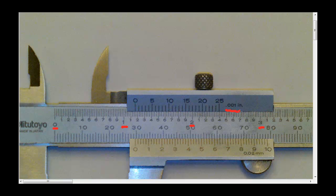It has an accuracy of 0.001 inches. If we have a look at the main scale, you can see small numbers next to the 0: 0, 1, 2, 3, 4.